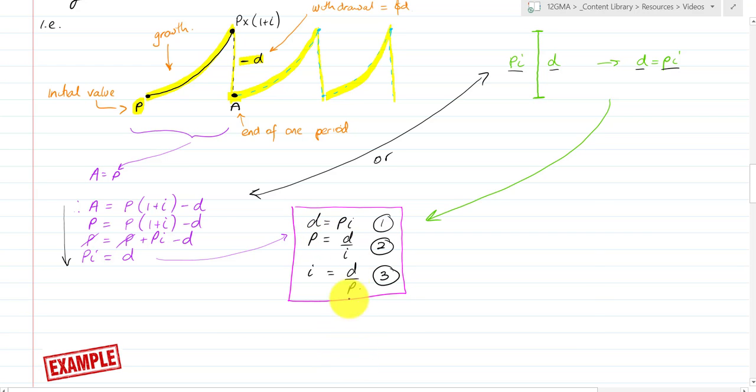The way to find D is D equals PI. The way to find P, the original amount, is P equals D over I. And the way to find I is I equals D over P. These are three versions of the one formula, just rearranged. Let's look at an example.